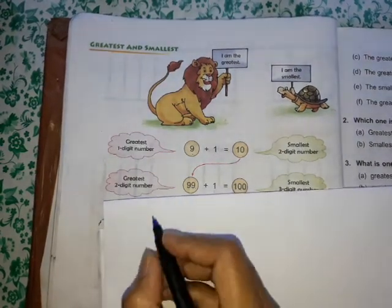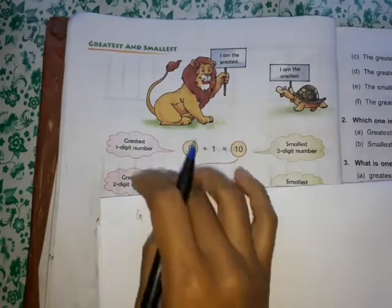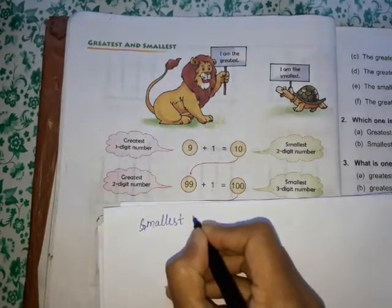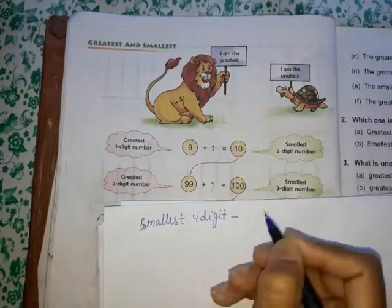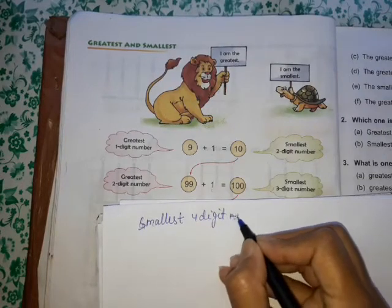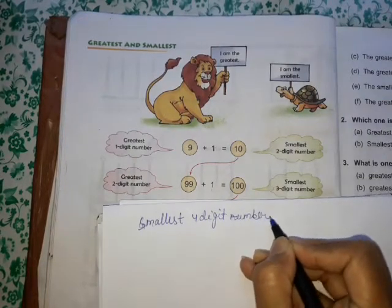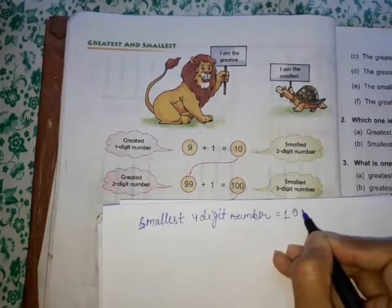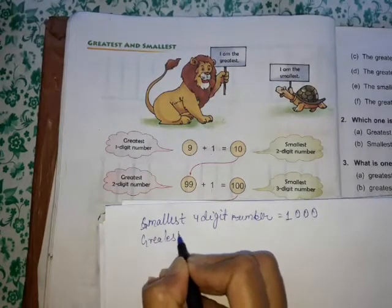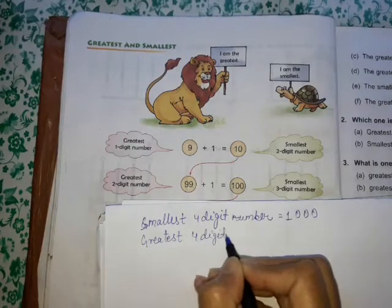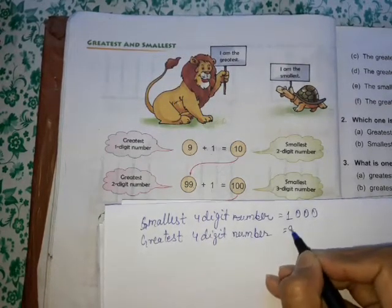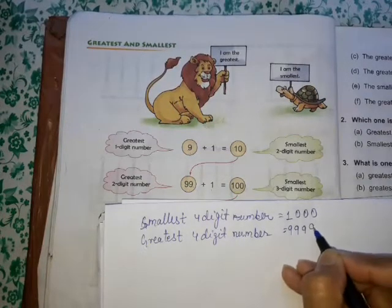In this class we are focused on four digit numbers. The smallest four digit number is 1000 and the greatest four digit number is 9999.